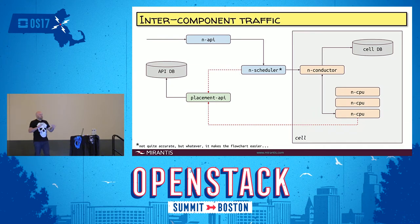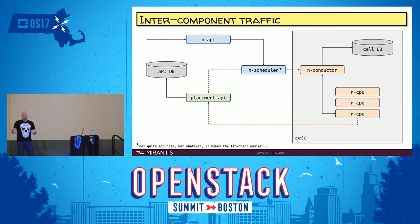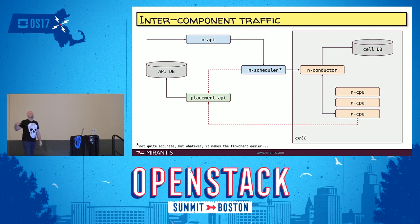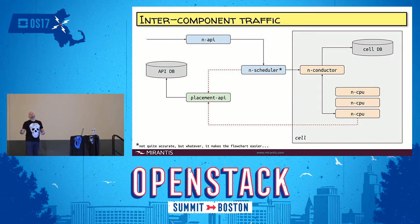Just a little background on intercomponent traffic. You've got the Nova API, which passes requests and information to the scheduler. The scheduler is going to communicate with the placement service and then pass information back on to the Nova conductor within a cell after it picks a direction. The compute nodes are going to be updating the placement API about inventory capacity, allocations, and that kind of thing.